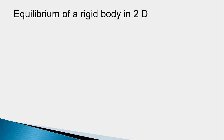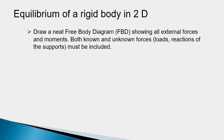In the last two videos we looked at the conditions of equilibrium for a rigid body and the support reactions. Today we are going to solve a problem on equilibrium of a rigid body in 2D. Let us take a quick look at the steps involved in solving such a problem.